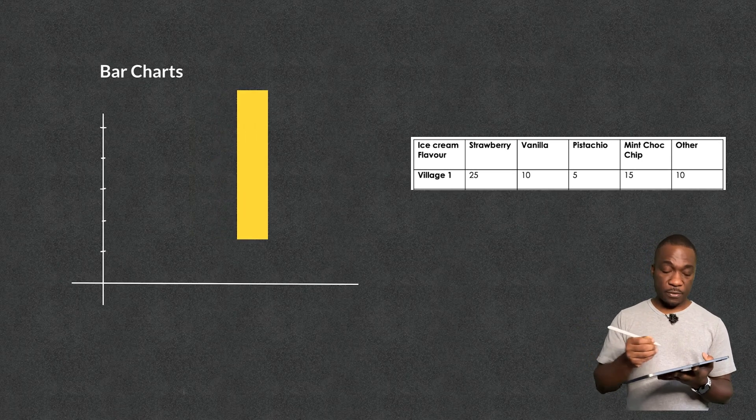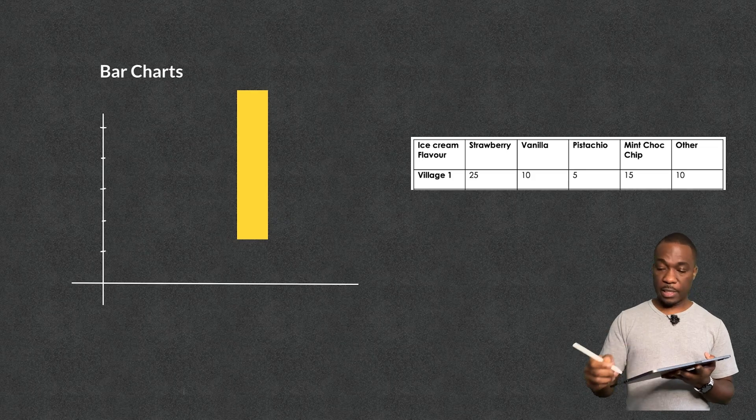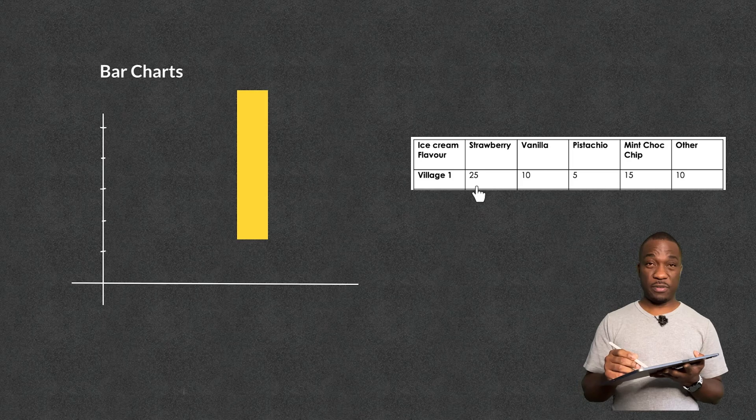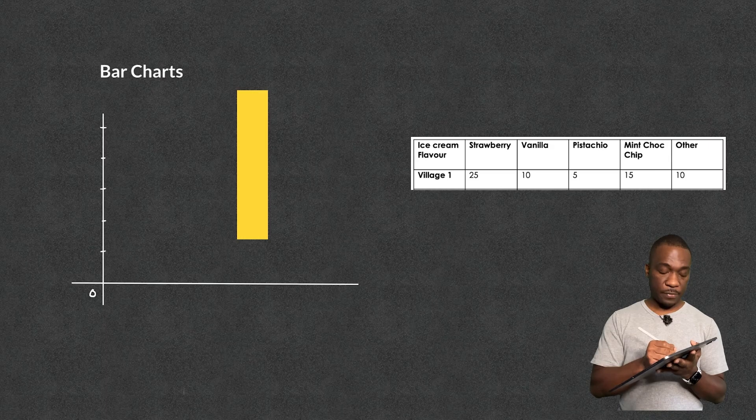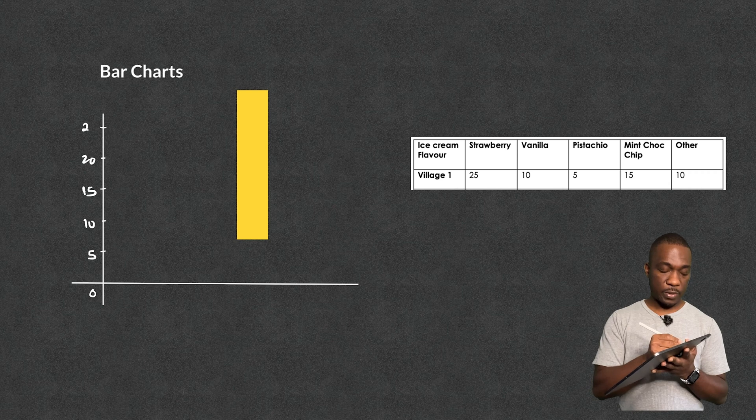So here we go. So first of all, I need to look at my biggest number. My biggest number here is 25. So when I go up on my frequency axis, this is called the frequency axis, I'm going up to 25. So I'll pick a nice scale starting on zero here, 5, 10, 15, 20, and 25 there.